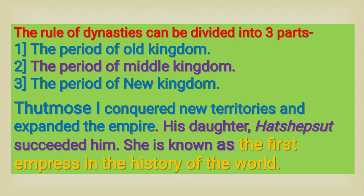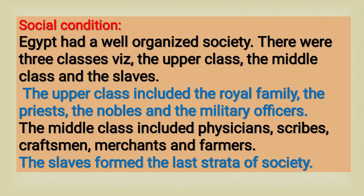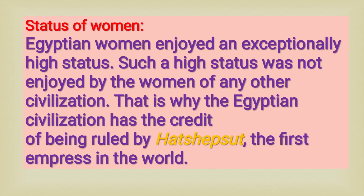Social condition: Egypt had a well-organized society with three classes — the upper class, the middle class and the slaves. The upper class includes the royal family, priests, nobles and military officers. The middle class includes physicians, scribes, craftsmen, merchants and farmers. Slaves formed the lowest strata of society.